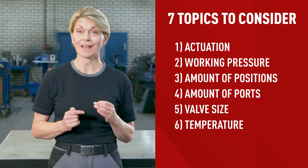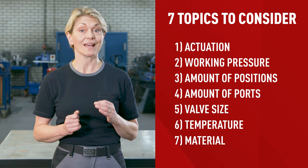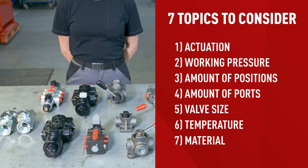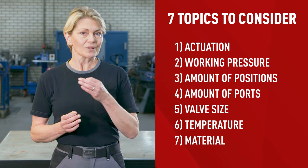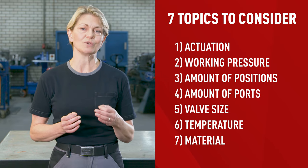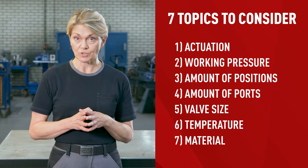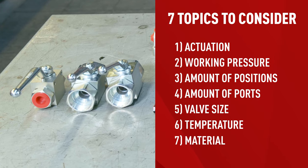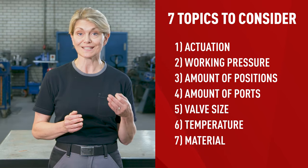Number six: what's the minimum and maximum temperature that the valve must be designed to accommodate? And finally, number seven: what material does the housing need to be? Valves can come in a variety of materials, each with their own characteristics. Within the agricultural industry, we mainly use cast iron, which is incredibly strong. Another common option is aluminium, which is light, has good thermal conductivity, and is resistant to oxidation. If you know of any additional considerations that could be helpful to others, please share them in the comments below.